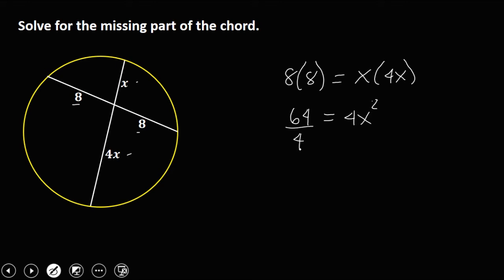Then divide by 4 to solve for X. So 64 divided by 4, that's 16, then we have X squared. Then take the square root,